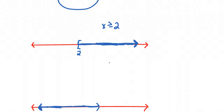To write this in interval notation, we'd write the interval from 2 to infinity. We put a closed bracket around the 2. Around an infinity, you always put an open parenthesis — that's just by convention. One way to think about it: does your interval really include infinity? Well, infinity is not a number, so it can't include infinity. So we always put an open parenthesis around an infinity. That's the answer in interval notation.